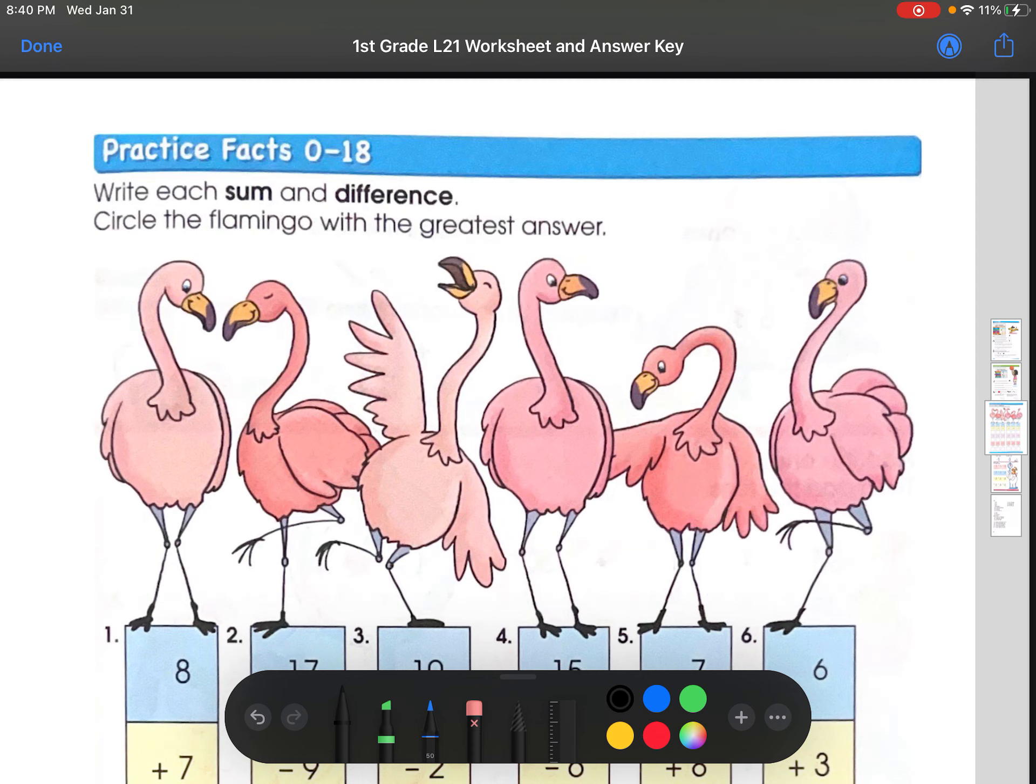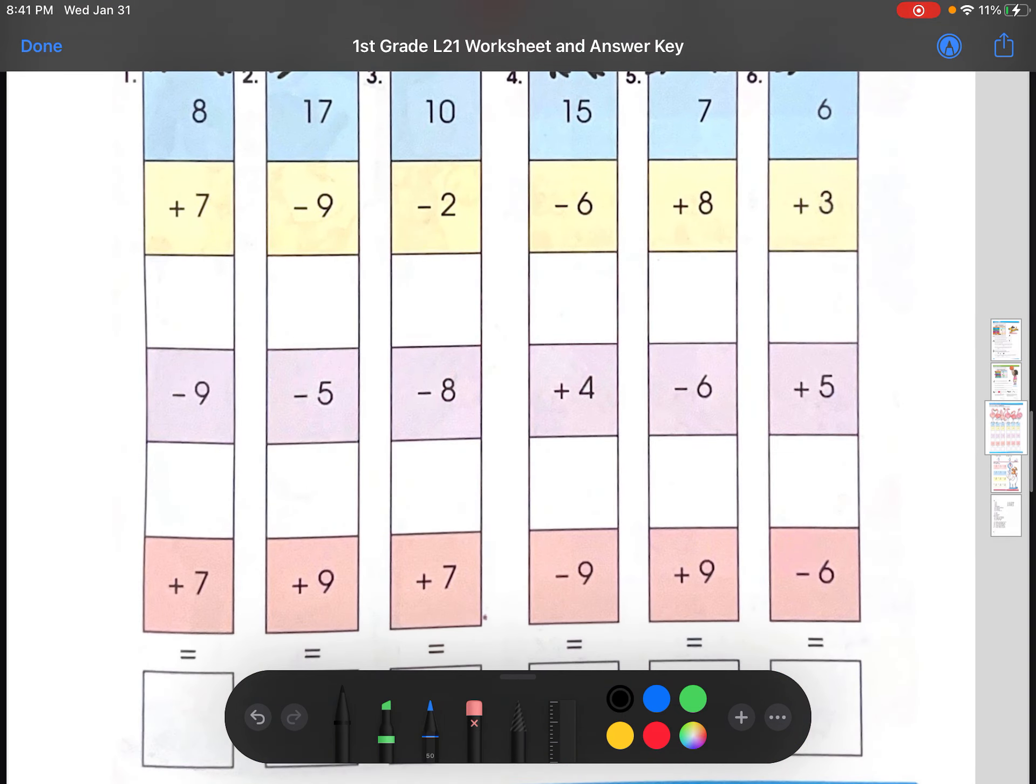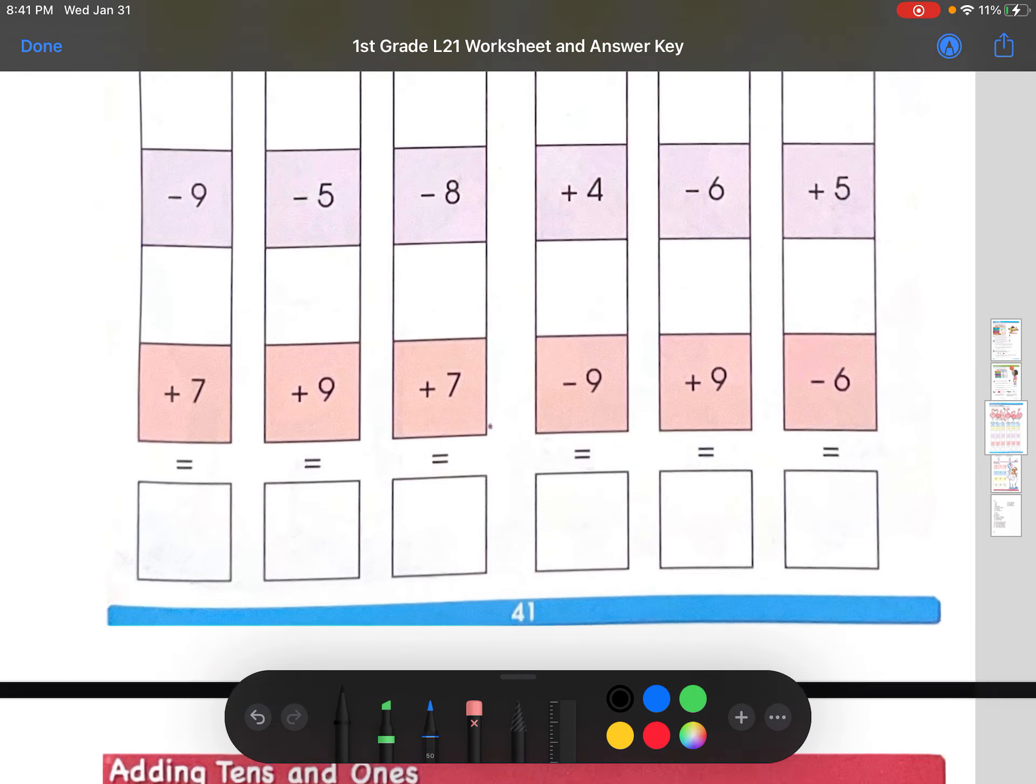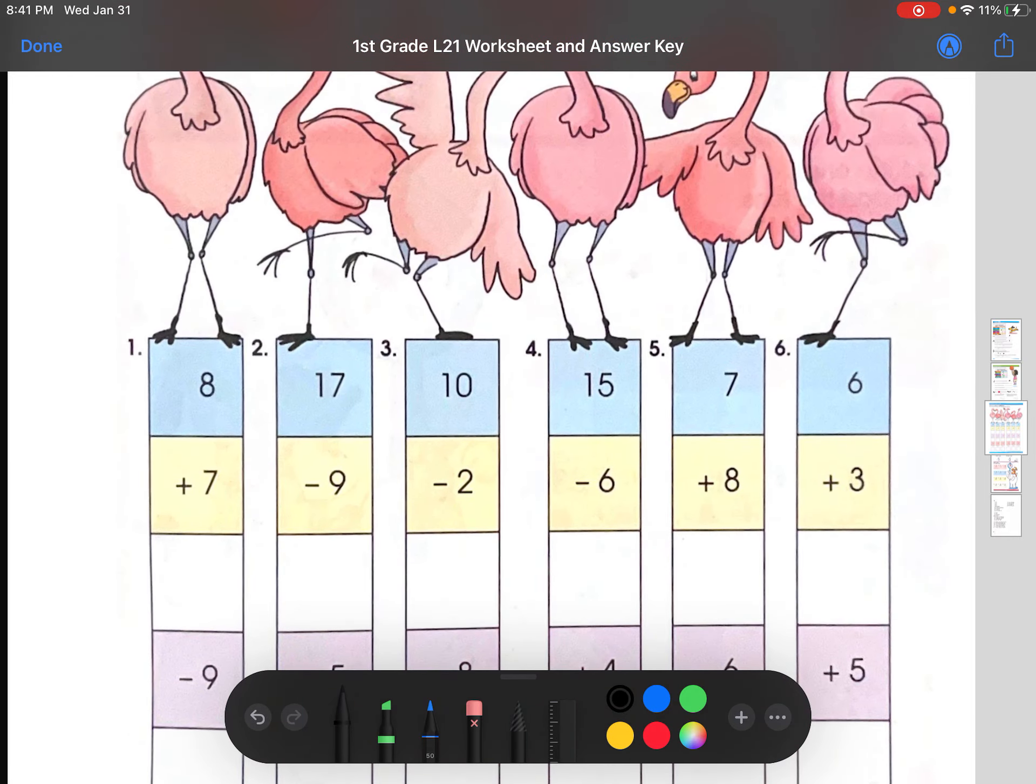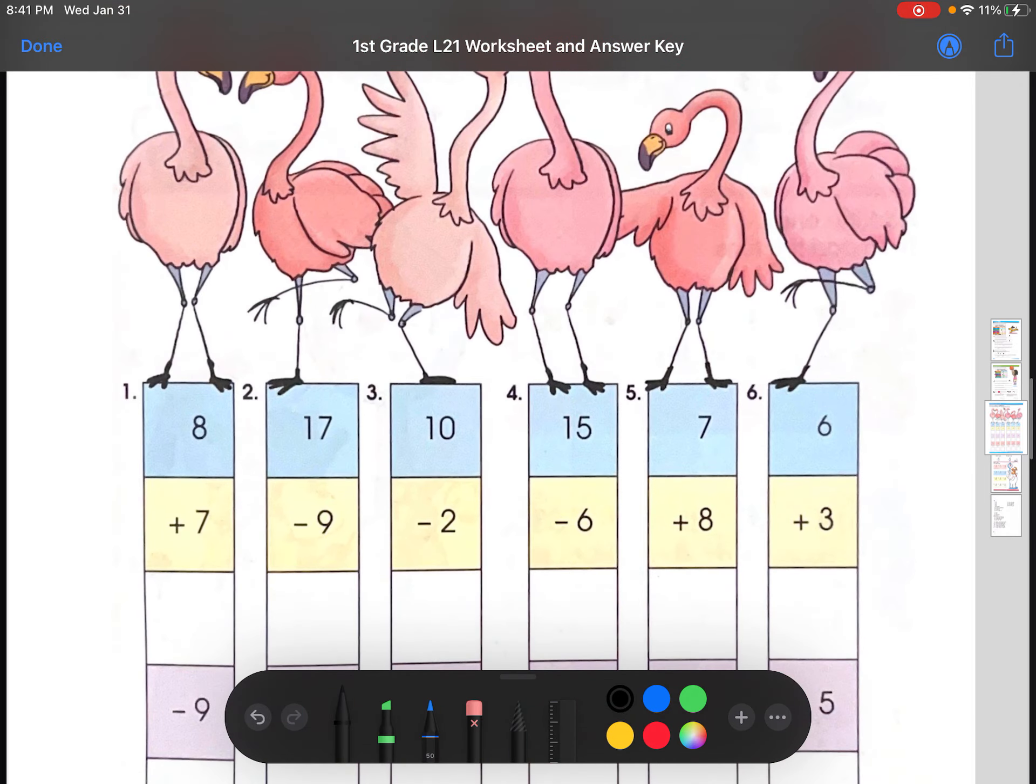Now, let's just move straight on. Practice facts 0-18. So, write each sum and difference. Circle the flamingo with the greatest answer. Let's go straight into it. Let's just do all of number one. I'll help you guys go down the entire row. Because this could be a little confusing.